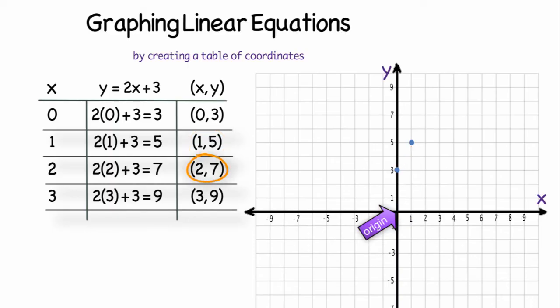(2, 7), I always start at the origin. I go over 2 on the x-axis and up 7 on the y-axis. And (3, 9), I start at the origin. I go over 3 on the x-axis and up 9 on the y-axis. And I do notice a linear pattern.